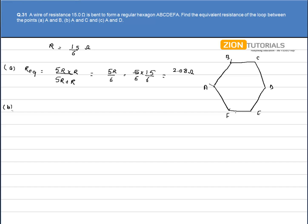In second case, we have to calculate across A and C. Across A and C, we have these two resistances in series, these four resistances in series and the equivalent of them are in parallel.